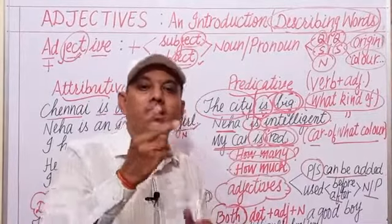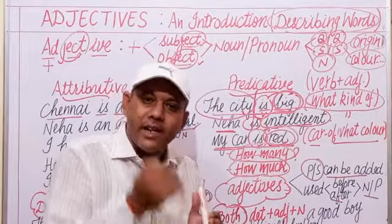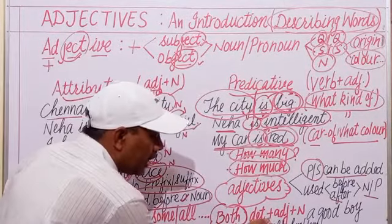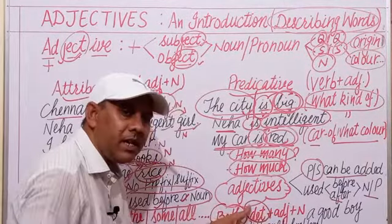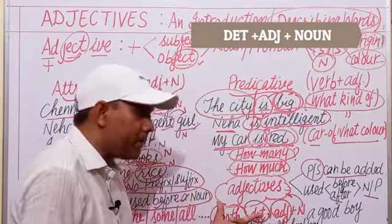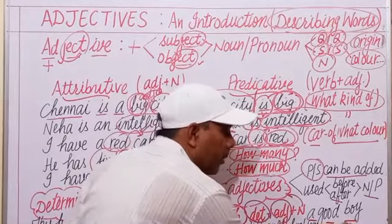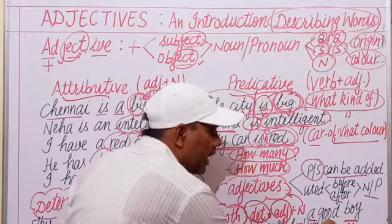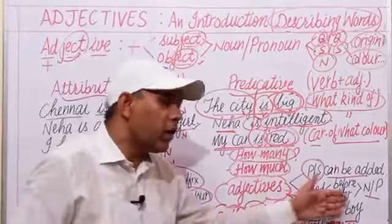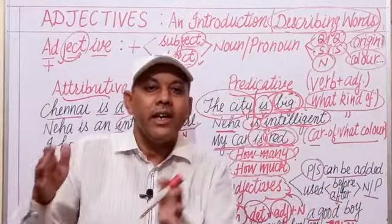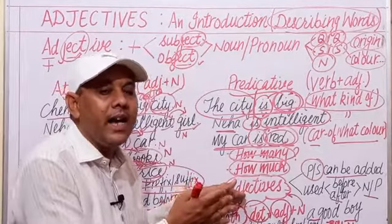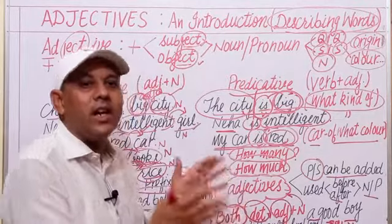If we need to use both a determiner and an adjective before a noun, we place the determiner first, then the adjective. For example: 'a good boy' — 'a' is the determiner, 'good' is the adjective, 'boy' is the noun. Similarly, 'a big city.' Determiners always precede adjectives and nouns in a sentence.